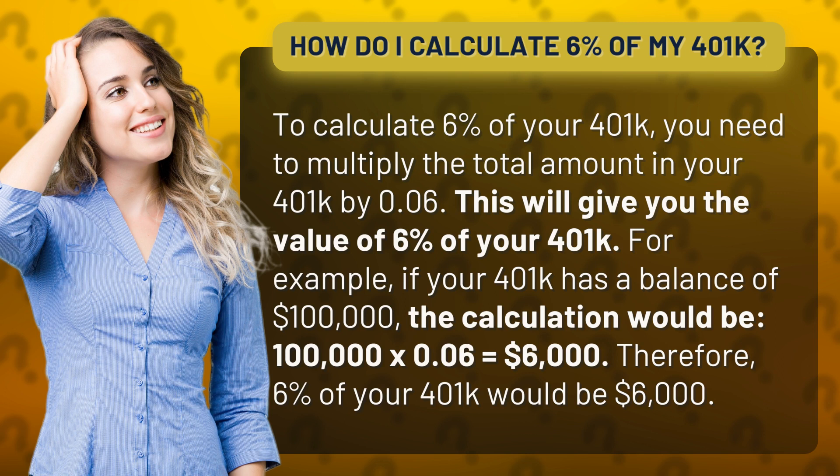For example, if your 401k has a balance of $100,000, the calculation would be $100,000 times 0.06, which equals $6,000. Therefore, 6% of your 401k would be $6,000.